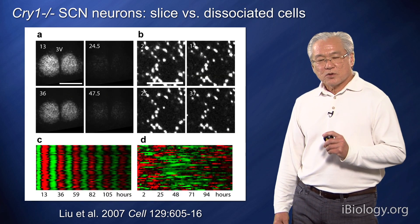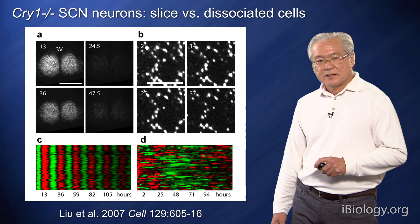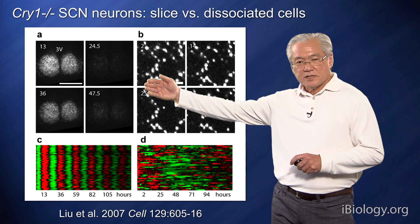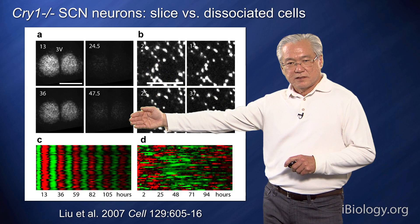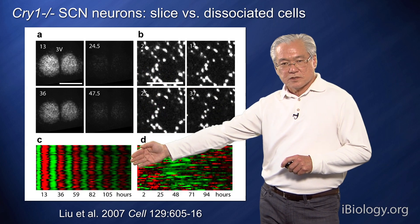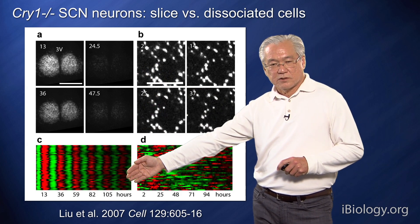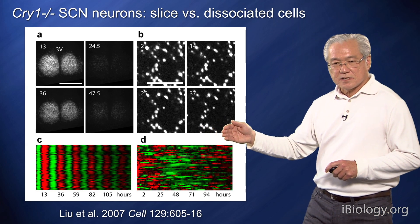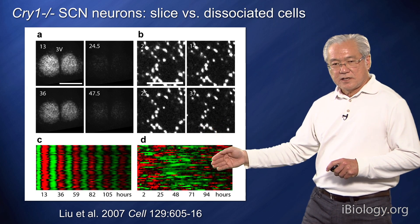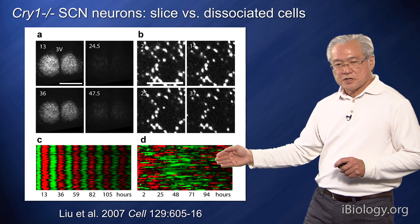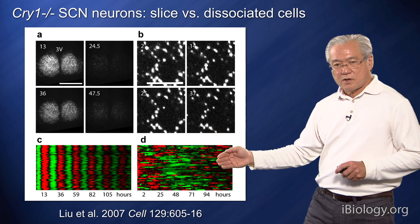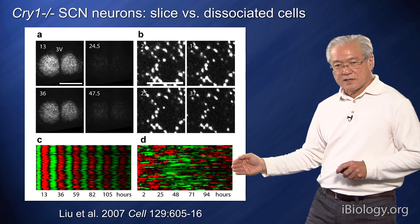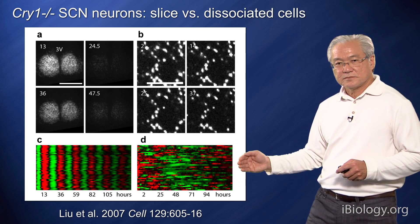In contrast, in cry1 knockout SCN neurons, we see that in the intact SCN, rhythms are generated and are coherent. But when we dissociate the cells, the SCN cells can no longer generate strong circadian rhythms, and at the cell-autonomous level, the rhythms are disrupted.